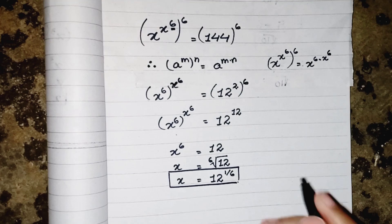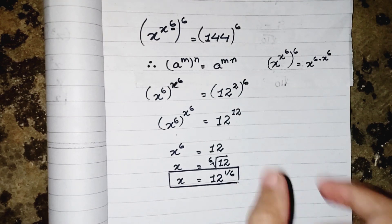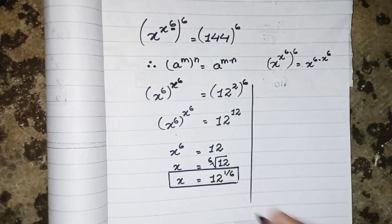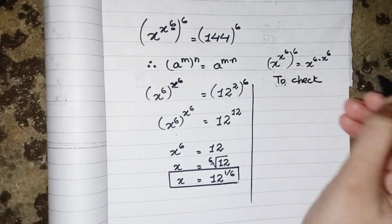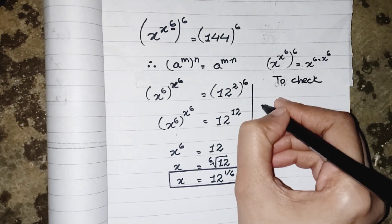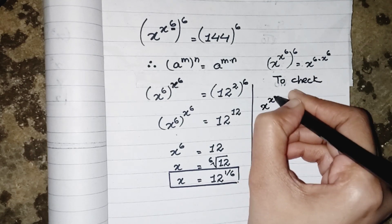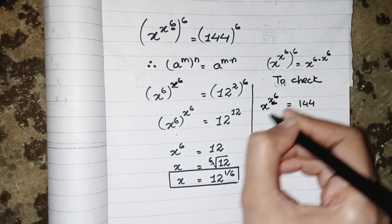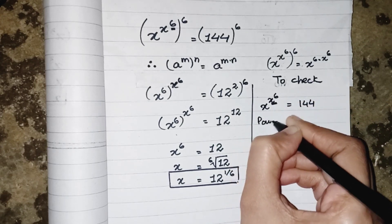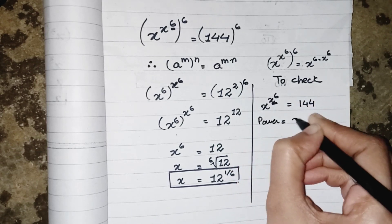Now we have to check whether this answer is justifying or not. To check (x^(x^6))^6 equals to 144, first we are doing for power, which is x^6. So we can write 12^(12^(1/6) × 6).